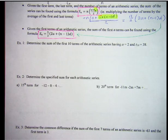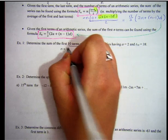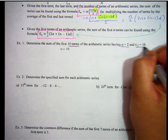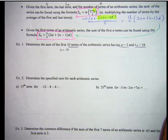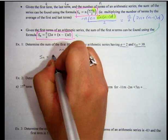Let's go over some examples. Determine the sum of the first 10 terms of an arithmetic series having A equals 2 and T10 equals 38. So because we want to know the sum of the first 10 terms, we know N equals 10, and we're given A equals 2 and the last term in the sequence.